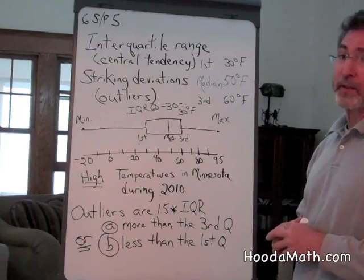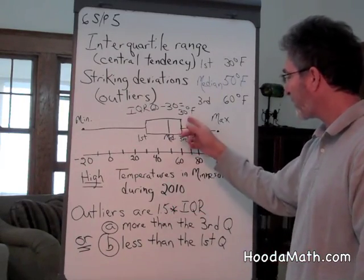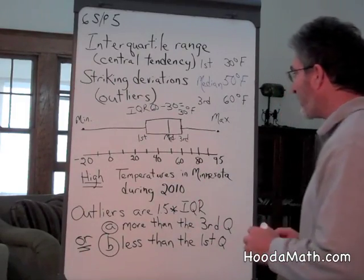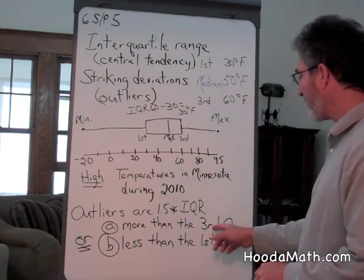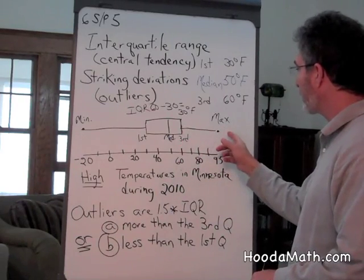To find out if we have an outlier, what we do is multiply one and a half times 30. One and a half times 30 is 45. If we add that to the third quartile, 45 degrees, to 60, we'd get 105.